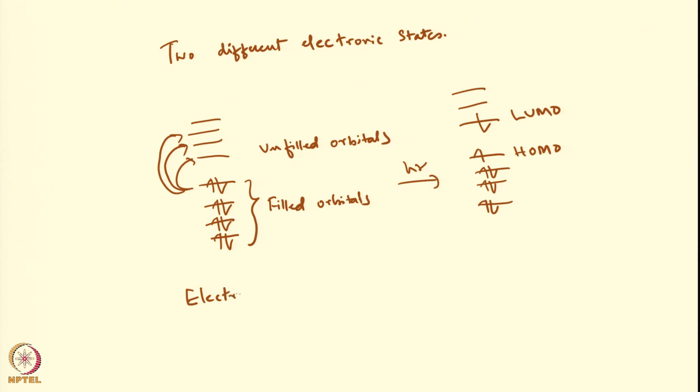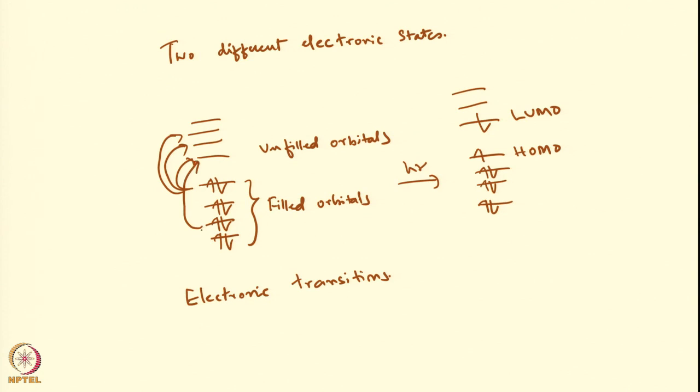So you are displacing an electron from one occupied orbital to another orbital. These are called electronic transitions. In electronic absorption, also known as UV-visible spectroscopy, you take an electron from one of the occupied orbitals and put it into an unoccupied orbital. You can also bring in electrons that are lower than HOMO, so many possibilities exist for electronic transitions.